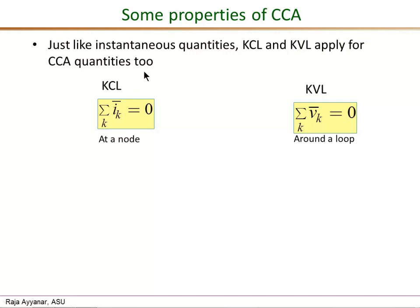The KCL in an instantaneous sense is that sum of instantaneous currents at a given node is 0, taking into account the current directions. Similarly, in an average sense, in a CCA sense as well, the sum of CCA currents entering a node is 0. Similarly, the sum of the voltage drops going around a loop both instantaneously as well as in an average sense is equal to 0.